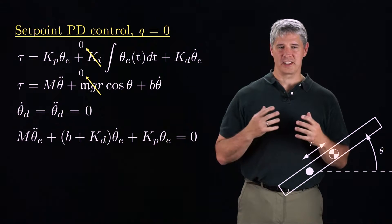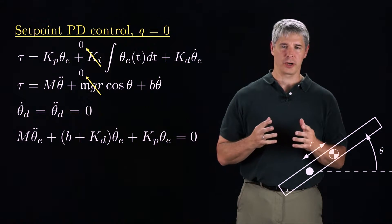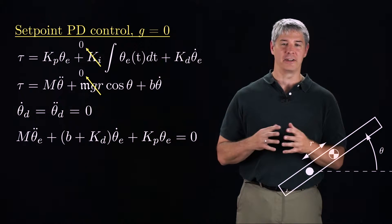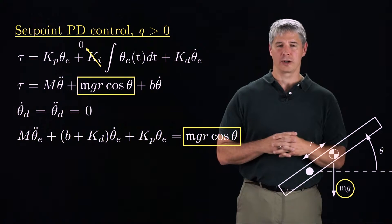In the previous video, we learned that set point PD control can eliminate steady-state error for a torque-controlled joint in the absence of gravity. If we add gravity, though, the error dynamics are no longer homogeneous.